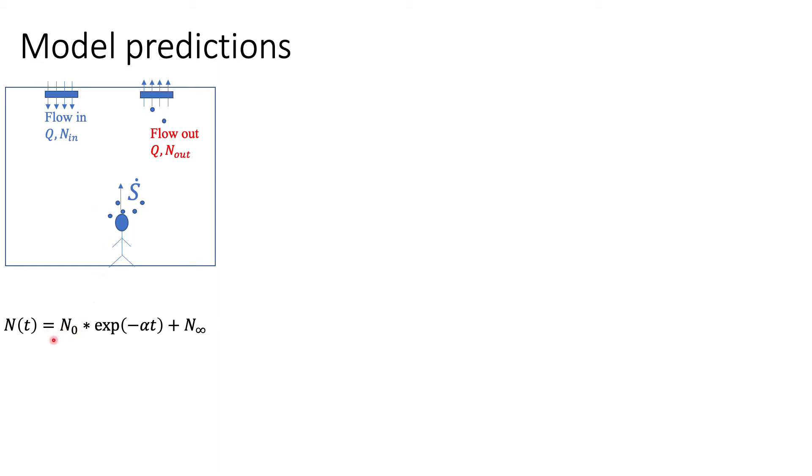The expression for particle concentration change over time remains the same, but these constants now have simpler expressions. Alpha is the ratio of the flow rate coming in divided by the volume, and we call that the air changes per hour. If the flow rate you bring in one hour equals the volume of the room, your air changes per hour would be one. Bring in more flow, you've got higher air changes.